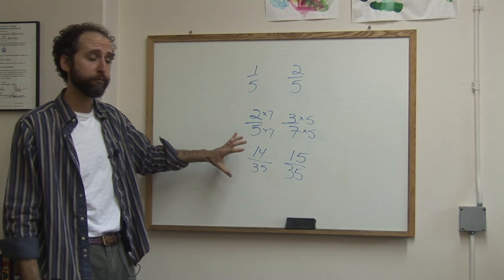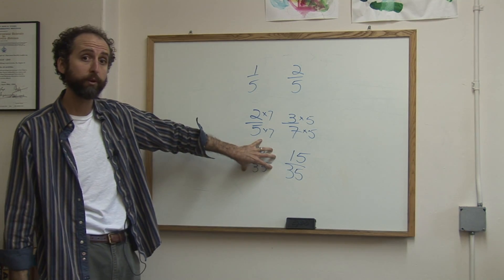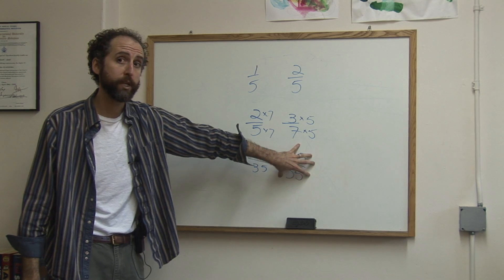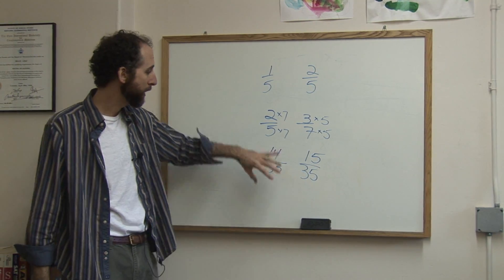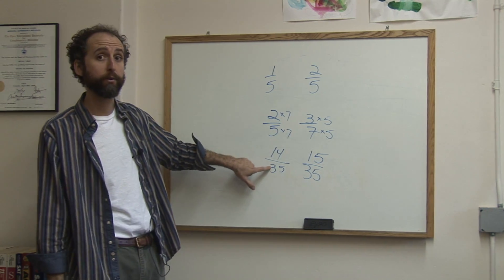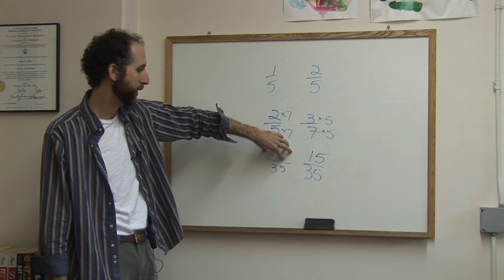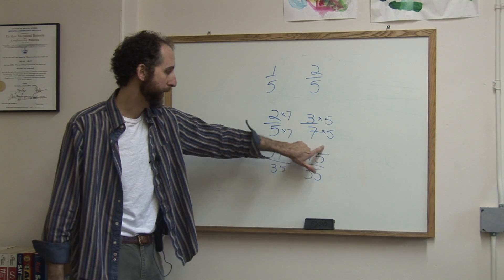So now when I compare the two fractions, this is fourteen out of thirty-five, and this is fifteen out of thirty-five. So that one is bigger. If you had a pizza divided into thirty-five slices, here you've eaten fourteen. Here you've eaten fifteen. And that's the bigger one.